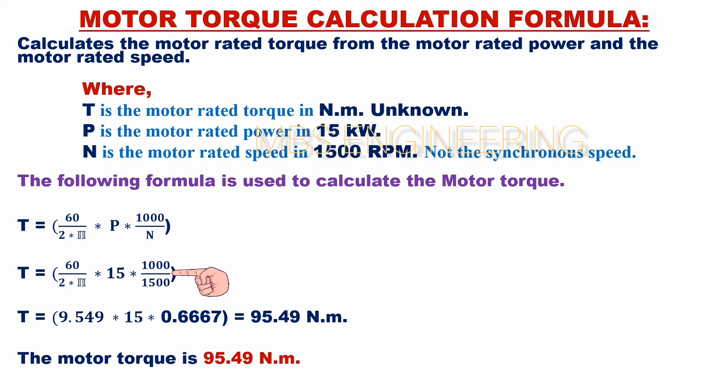Next, solve the motor torque. T equals 60 times 15 times 1000, and the obtained value is divided by 2 times pi times 1500. Next, the motor torque T equals 9.549 times 15 times 0.6667.